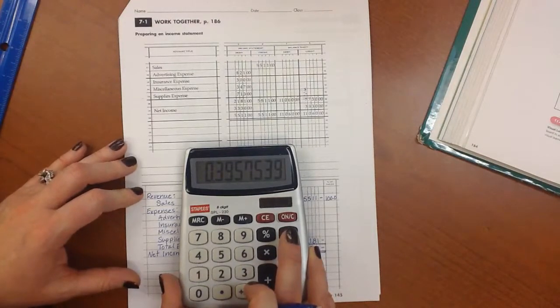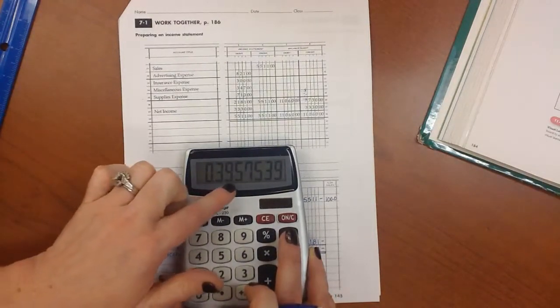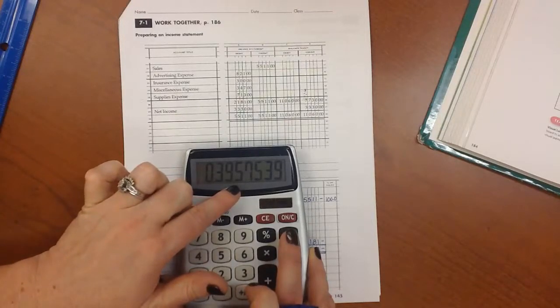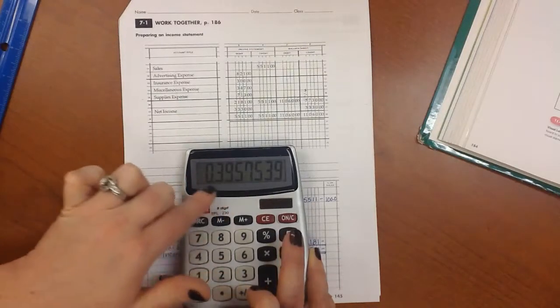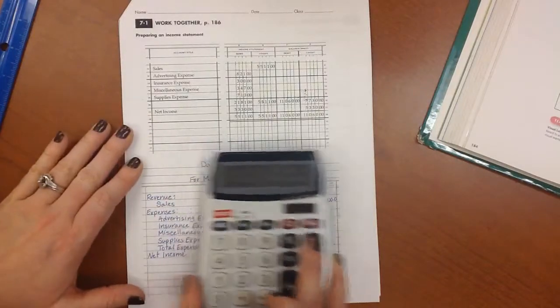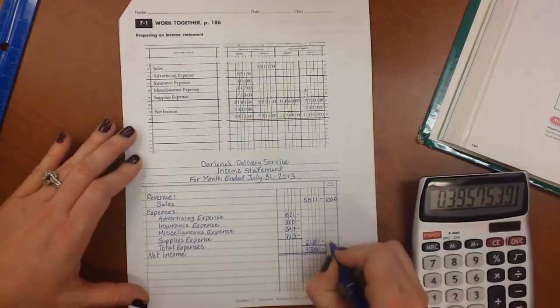Now we want percentages, so we have to move the decimal over twice. So I get 39.5, but that's a 7, so I need to round, so I get 39.6. And we write that here.